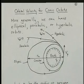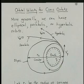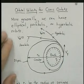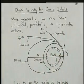What if you don't want to be in a circular orbit, or you want to know the general theory? Well, we'll look now at orbital velocity for conic orbits. So in general, we could have elliptical orbits, parabolic orbits, or hyperbolic orbits.